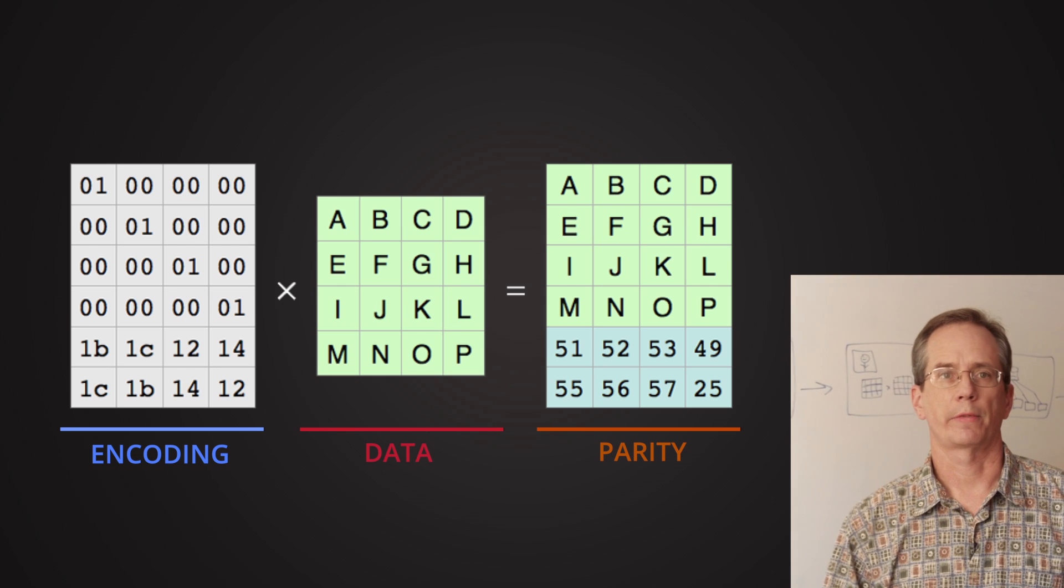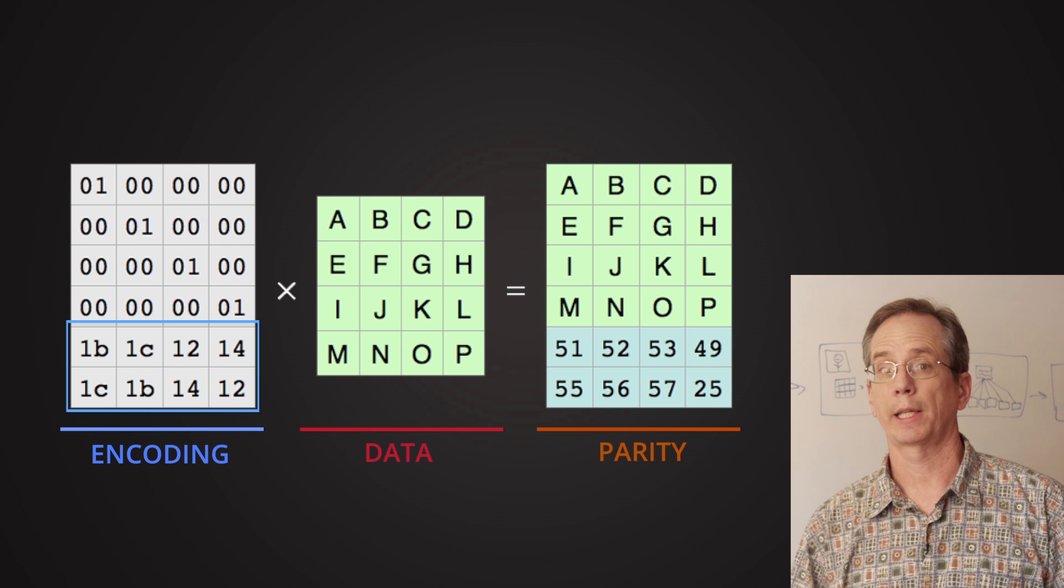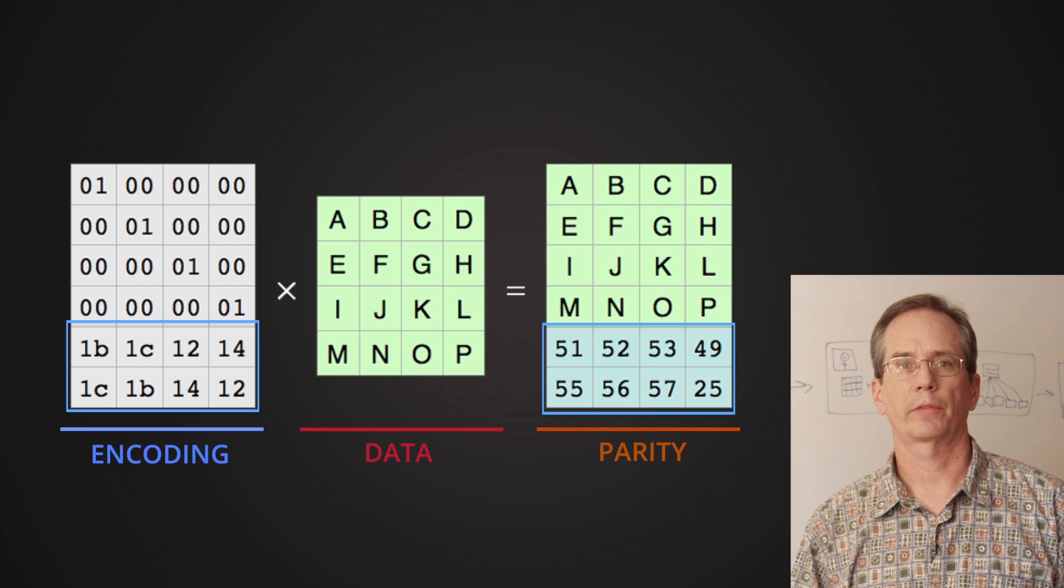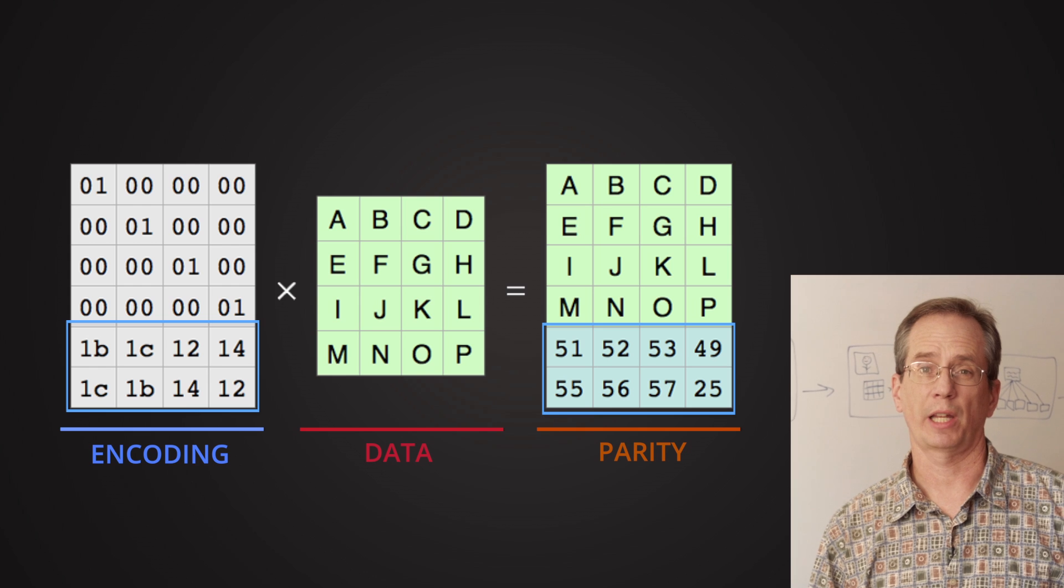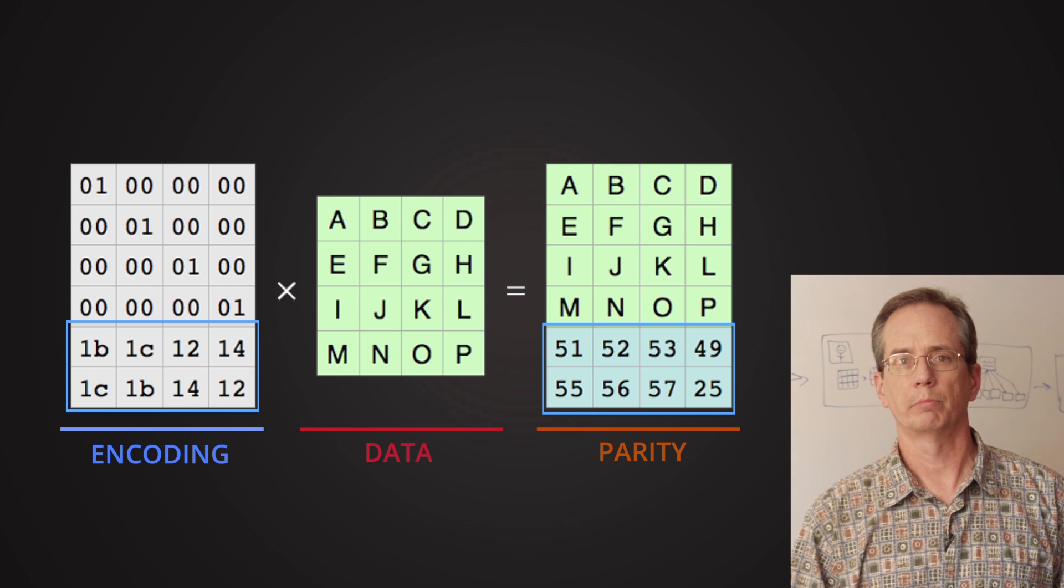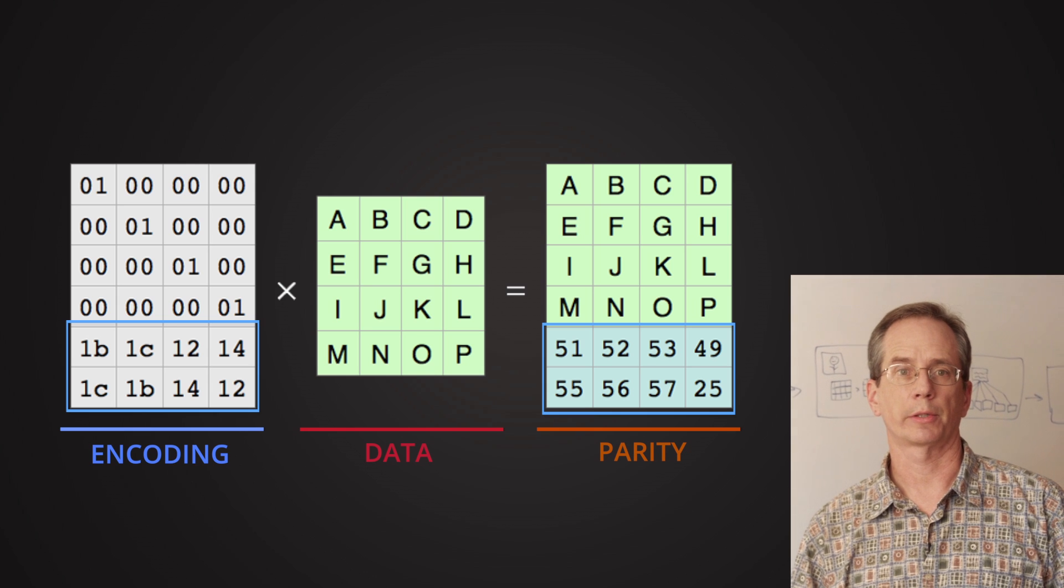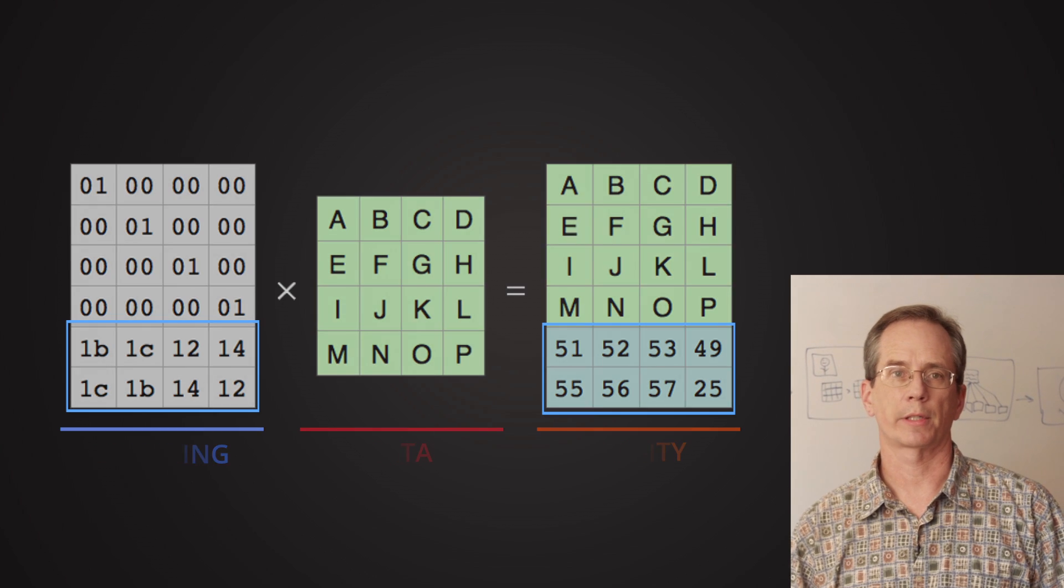The bottom two rows of the encoding matrix, and of the matrix on the right, which is the data we're going to store, is the parity, and that actually takes some computation. You take the bottom two parity rows of the encoding matrix, multiply them by your data, and you get the parity shards you're going to store on the drives in the data center.